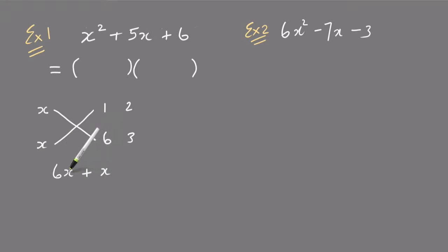So 6 times x is 6x, 1 times x is x, that's positive, so that's plus. 6x plus x equals 7x. Now that's not the middle term, so these two numbers are not the factors that will give us the middle term. So trying the other factors of 6, 3 times x is 3x.